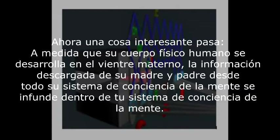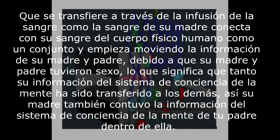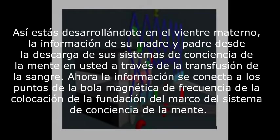As your human physical body develops in the mother's womb, your mother and father's downloaded information from their entire mind consciousness system infuses within your mind consciousness system. It is transferred through the infusion of the blood. As your mother's blood connects with your blood and starts moving, your mother's information and your father's information — because your mother and father had sex, meaning both their mind consciousness system information has been transferred into each other — so your mother also contains your father's information within her.